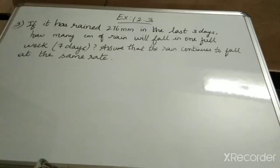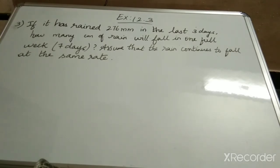Now third question. If it has rained 276 mm in the last 3 days, how many centimetres of rain will fall in 1 full week — that is 7 days — assuming that the rain continues to fall at the same rate.